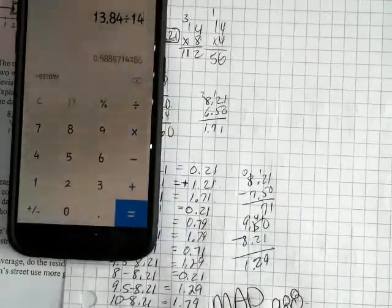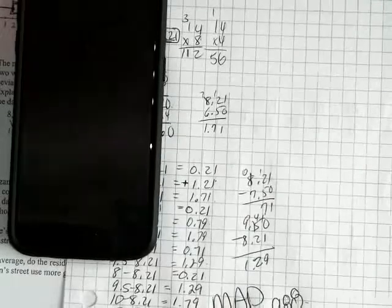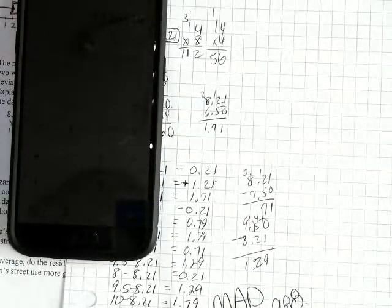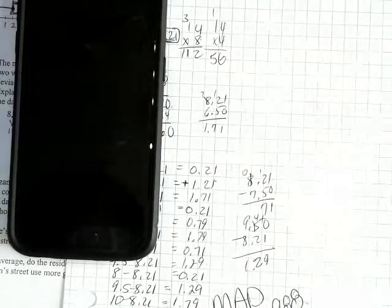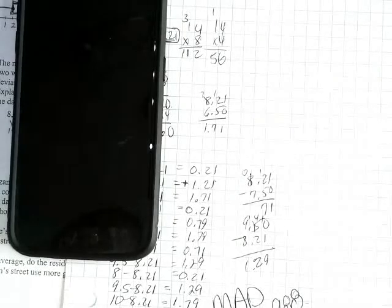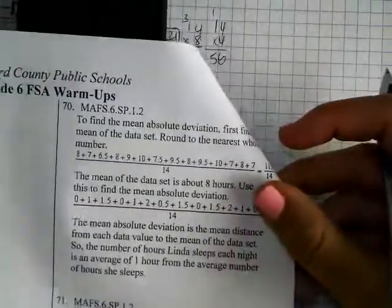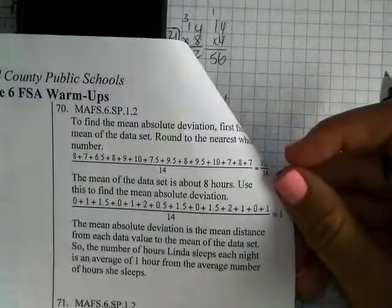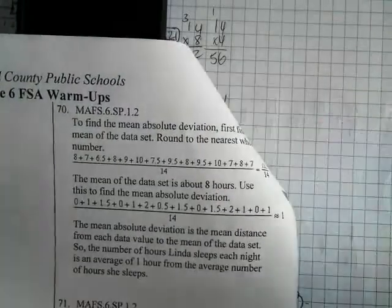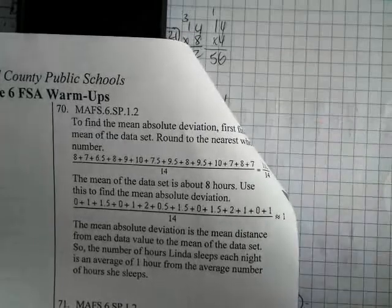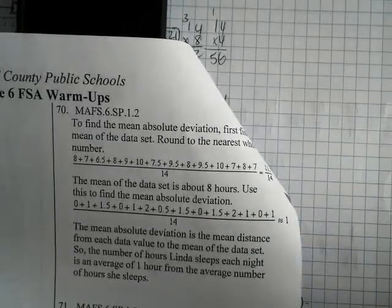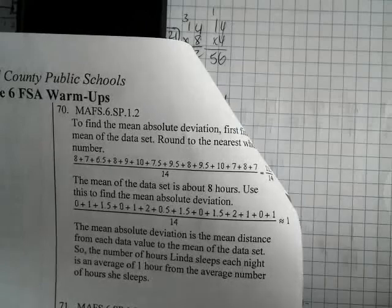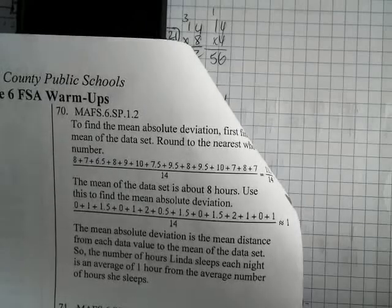The MAD is the mean distance from each data value to the mean. So for number 70, the mean absolute deviation is the mean distance from each data value to the mean of the data set — meaning the number of hours Linda sleeps each night is on average about 1 hour away from the average number of hours she sleeps.